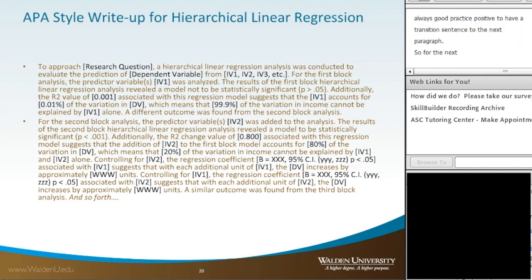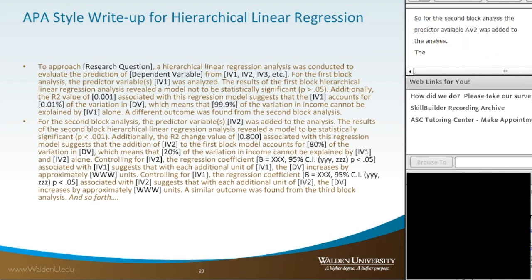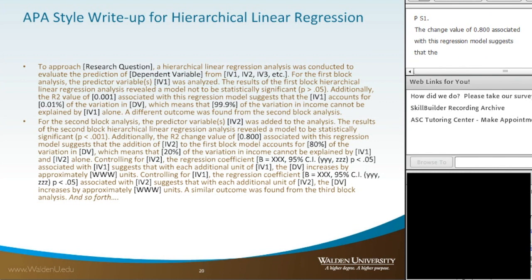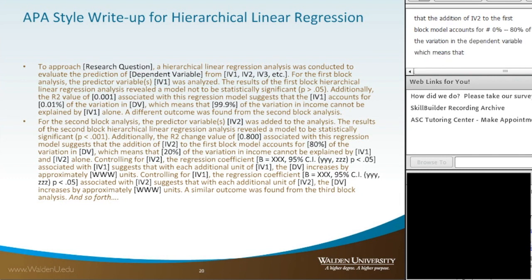The results of the second block hierarchical linear regression analysis revealed a model to be statistically significant, where p is less than 0.001. Additionally, the R-square change value of 0.800 associated with this regression model suggests that the addition of IV2 to the first block model accounts for 80% of the variation in the dependent variable, which means that 20% of the variation in income cannot be explained by independent variable 1 and independent variable 2 alone.